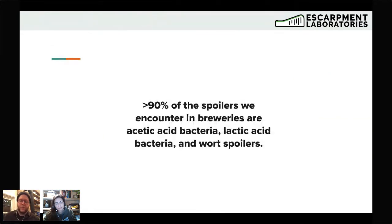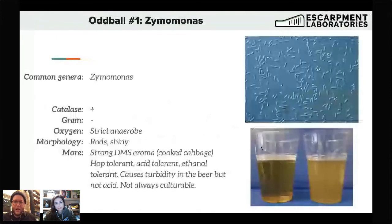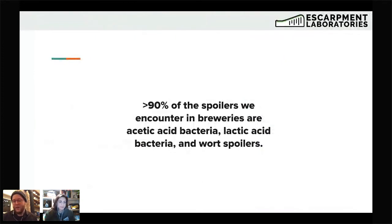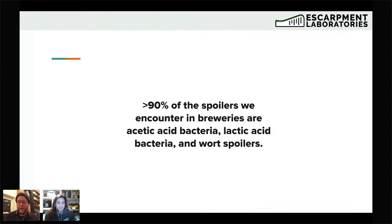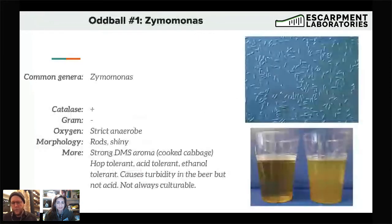More than 90% of the spoilers we encounter in breweries are really these three: acetic acid bacteria, lactic acid bacteria, and wort spoilers — at least on the bacteria side. On the yeast side it's mostly Saccharomyces var. diastaticus or other wild Saccharomyces rather than Brett. That said, the number of microbial threats we face is relatively limited, which is reassuring. One interesting oddball is Zymomonas — the 'chaotic evil' bacteria. It's an anaerobe but catalase-positive, which is perplexing, and it can survive in finished beer. Some strains are used in biotechnology because they tolerate pretty high alcohol content.